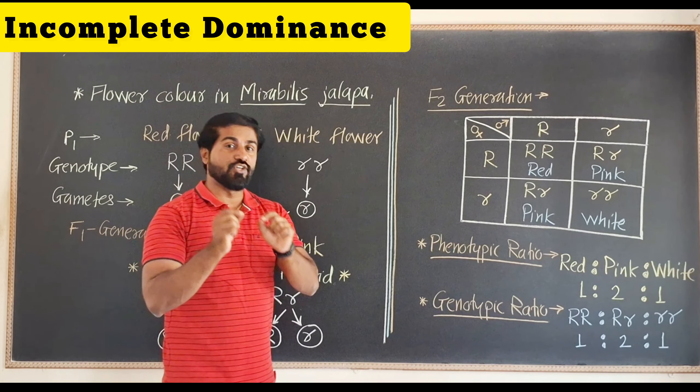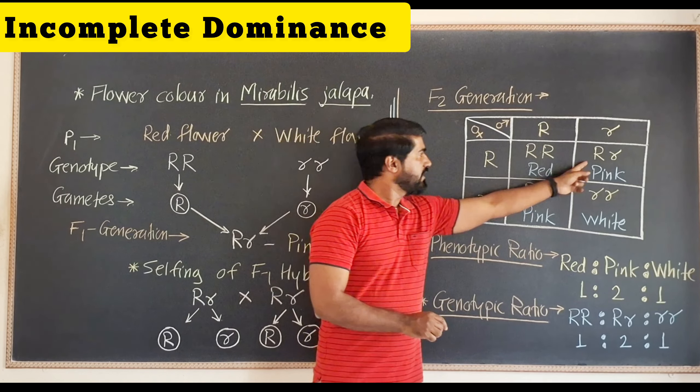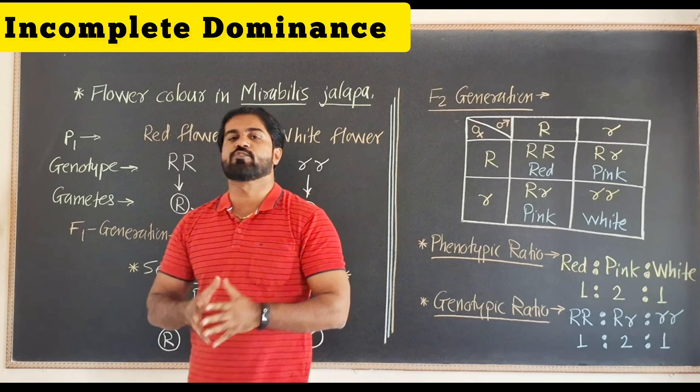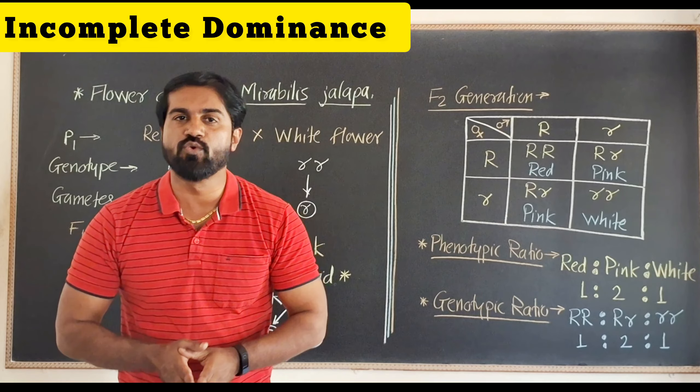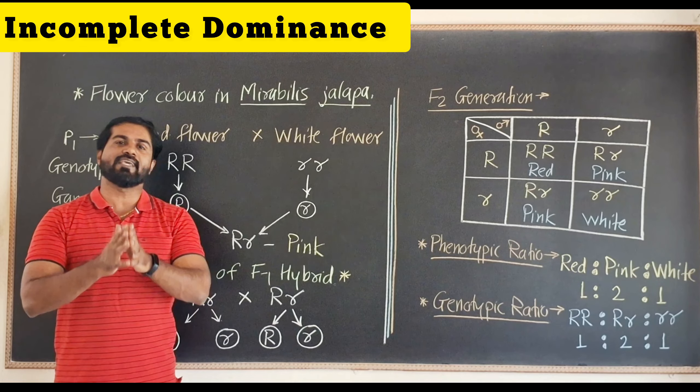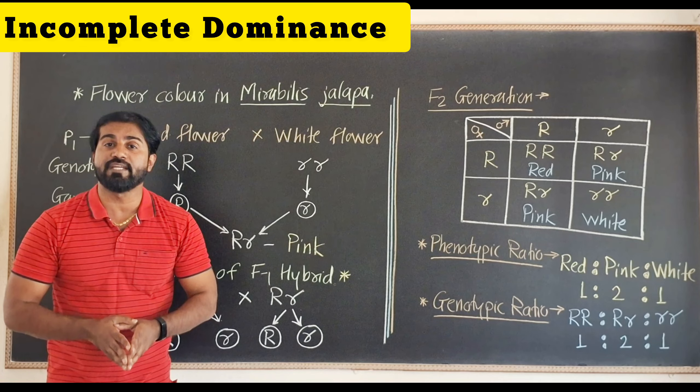And if we consider genotypic ratio, that means capital R capital R, capital R small r, and small r small r. It is also 1:2:1. That means both phenotypic and genotypic ratios are same - 1:2:1 for incomplete dominance.